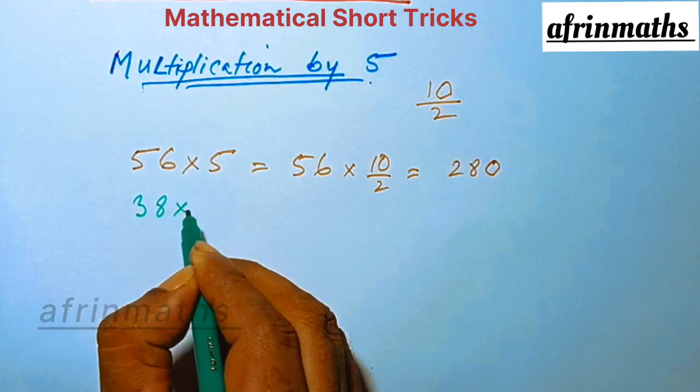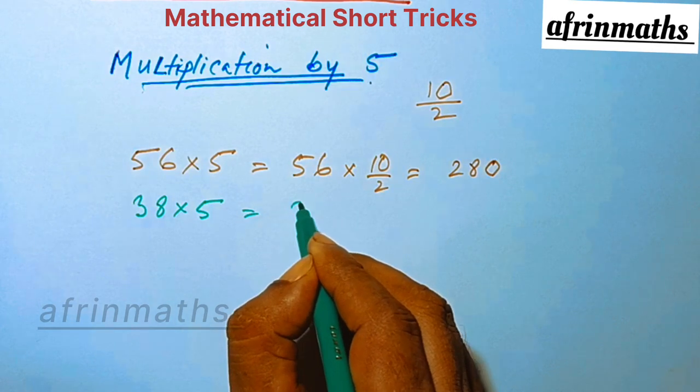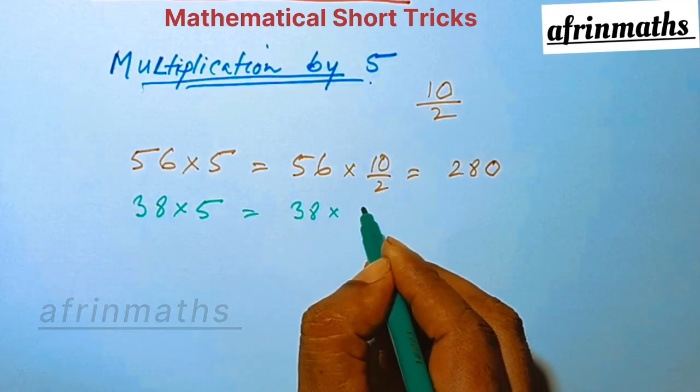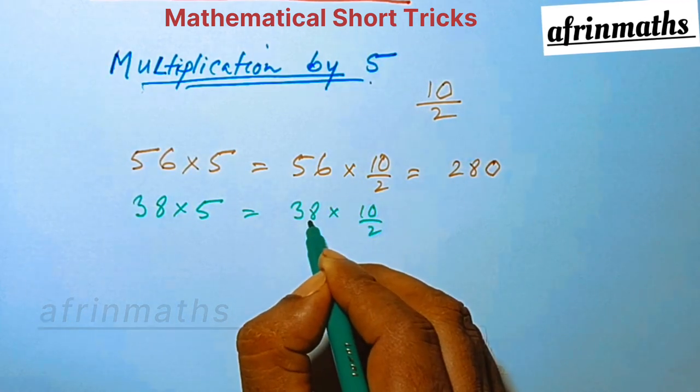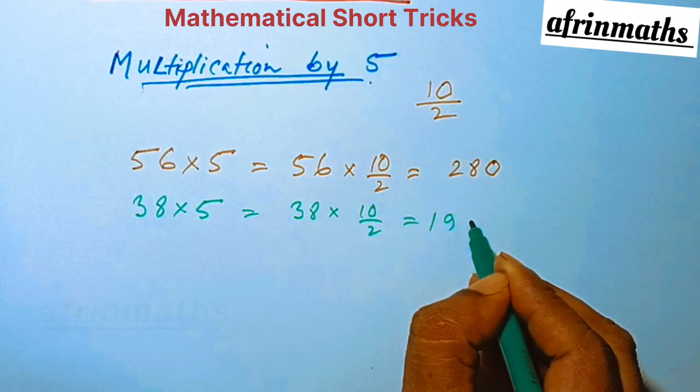Likewise, 38 into 5, which is 38 into 10 by 2. That means half of 38 is 19, and we have a 0 here, so 190.